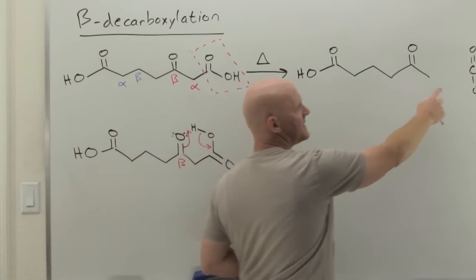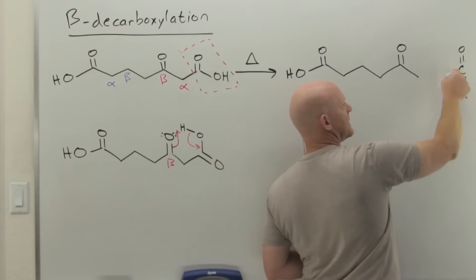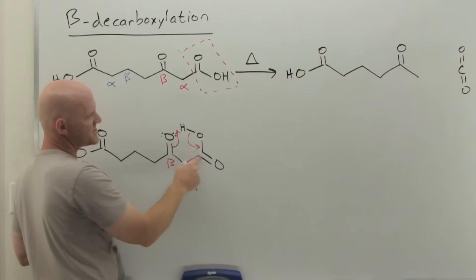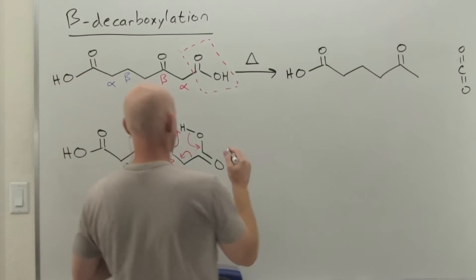That frees up these electrons to come and form a pi bond over here. If you notice our carbon dioxide, the carbon has pi bonds, double bonds to two different oxygens. We already have a double bond to one oxygen. Now we're making a double bond to the other one. But so that we don't violate this carbon's octet rule, this guy ends up over here.